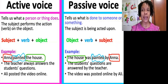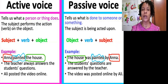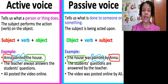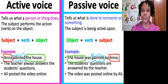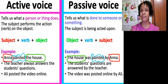Let's look at the example: The house was painted by Anna. The house is the object, painted is the verb, and Anna is the subject.